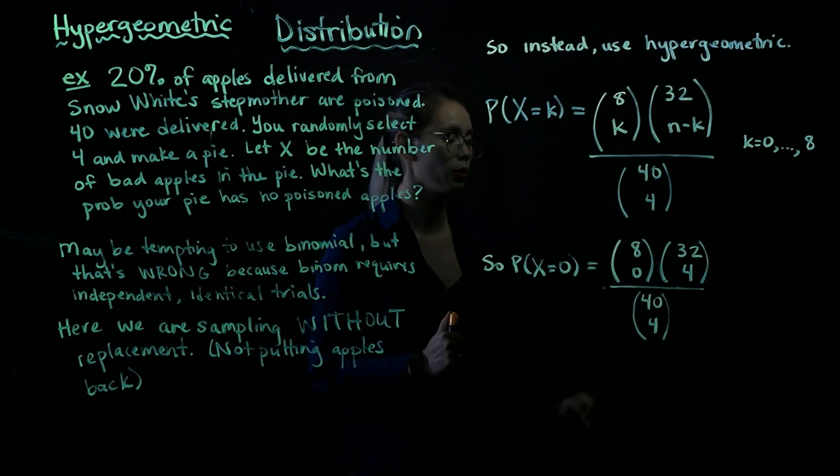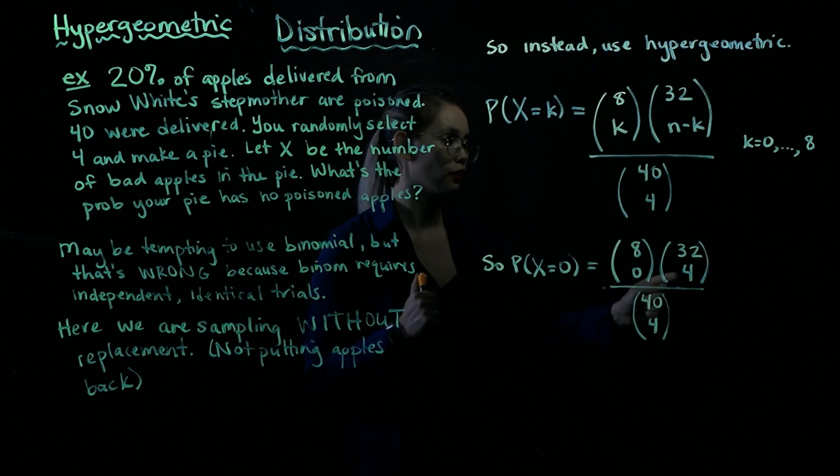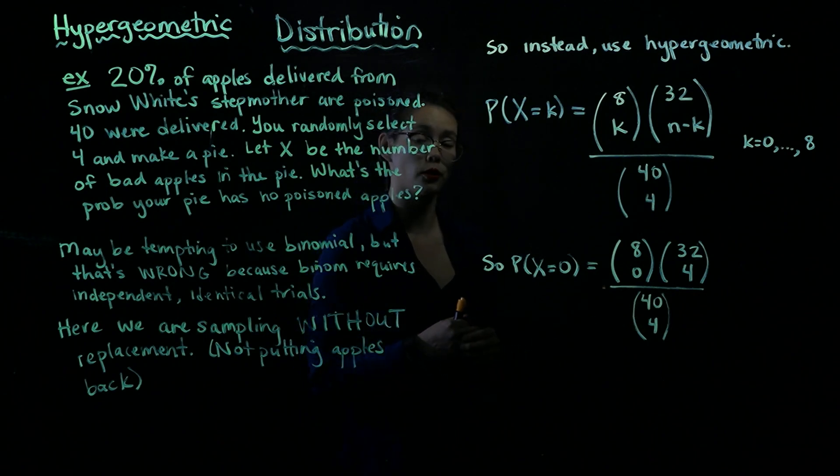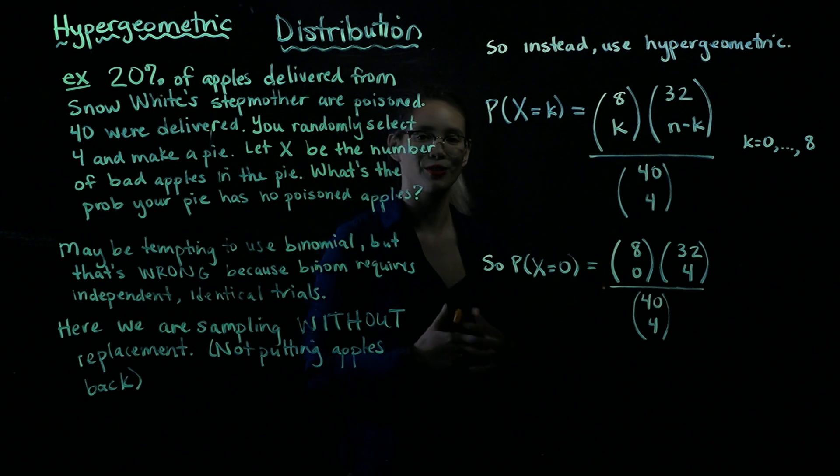So up in the numerator, we have 32 choose 4 times 8 choose 0. And then in the denominator, we have the total number of ways that we could choose 4 apples out of 40. And that's 40 choose 4.